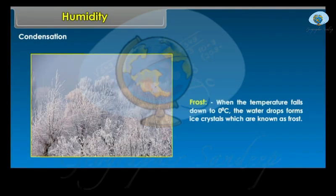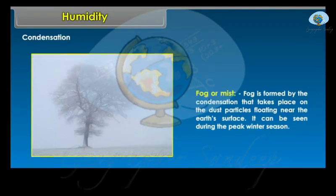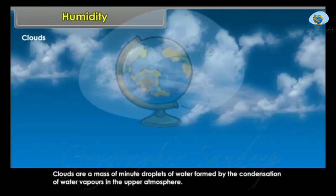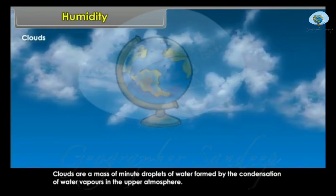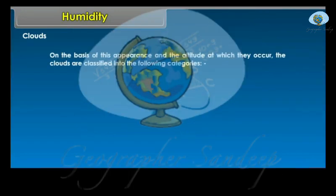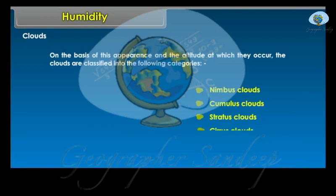Frost: When the temperature falls down to zero degrees Celsius, the water drops form ice crystals which are known as frost. Fog or Mist: Fog is formed by the condensation that takes place on the dust particles floating near the earth's surface. It can be seen during the peak winter season. Clouds: Clouds are a mass of minute droplets of water formed by the condensation of water vapours in the upper atmosphere. On the basis of their appearance and the altitude at which they occur, the clouds are classified into the following categories: Nimbus clouds, Cumulus clouds, Stratus clouds, and Cirrus clouds.